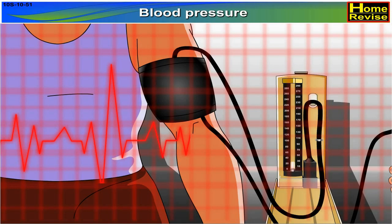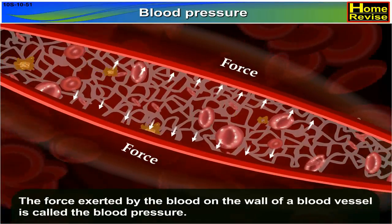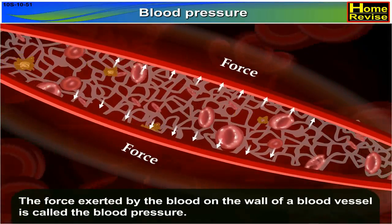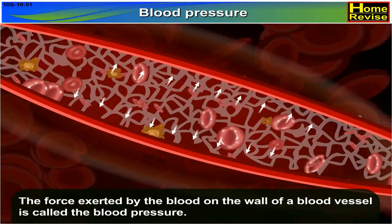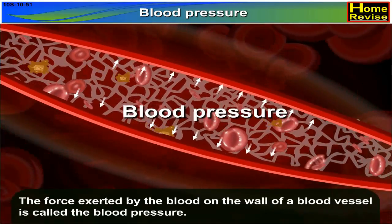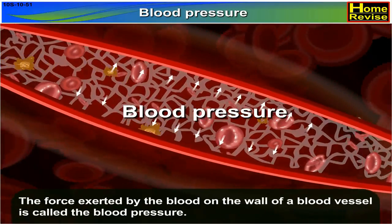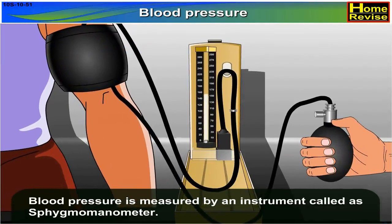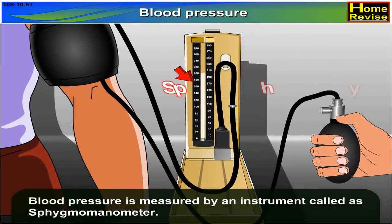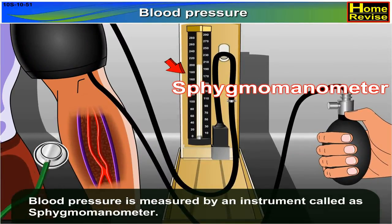Blood pressure. The force exerted by the blood on the wall of a blood vessel is called the blood pressure. Blood pressure is measured by an instrument called a sphygmomanometer.